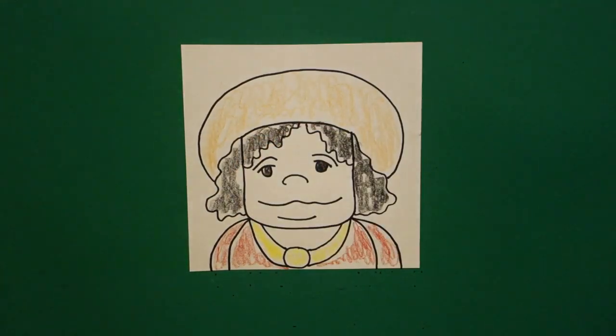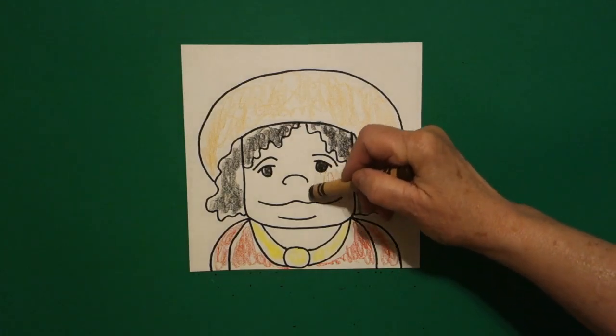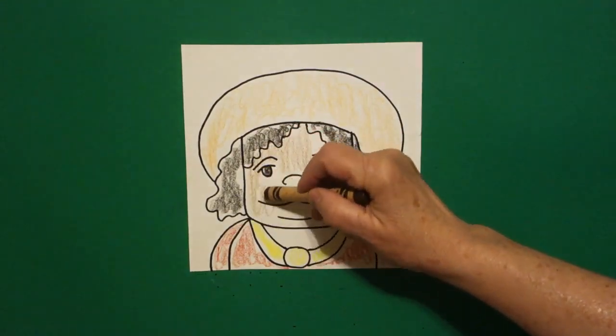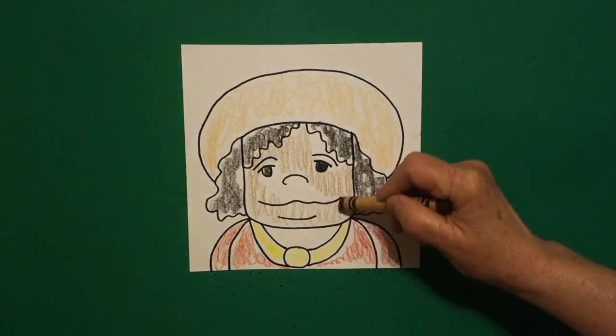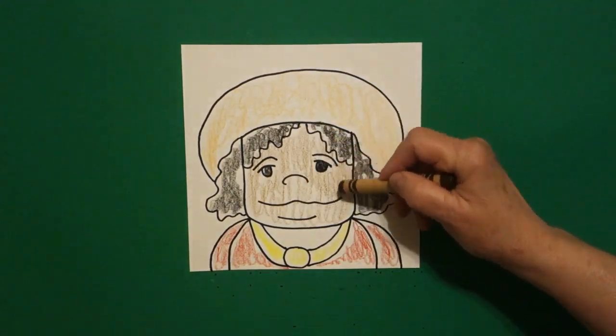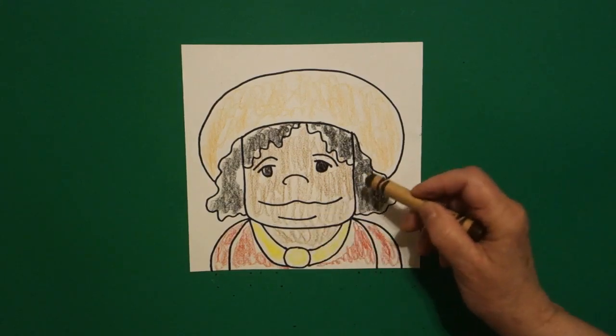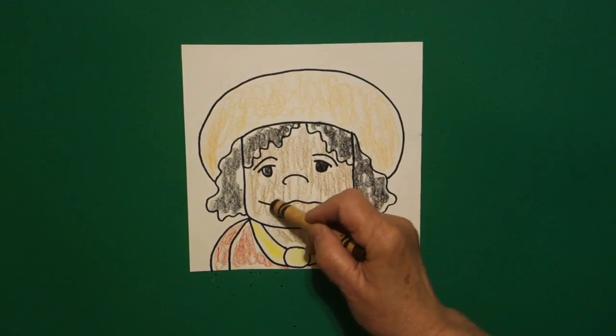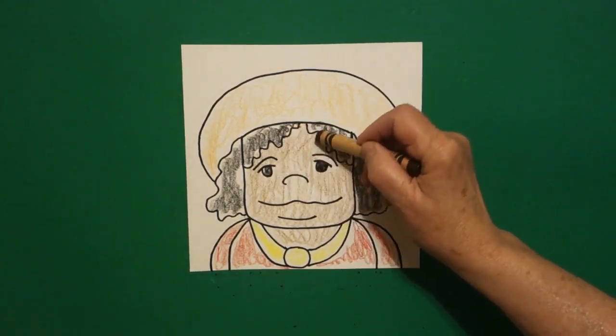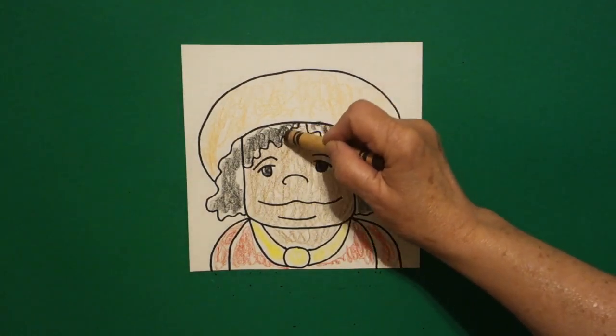Now for his skin color, I'm just using a regular brown. And what you might want to do is color it one time, going in one direction, just to get it all evenly spread. This is his neck. This should be brown. And then you might want to go over it again, going the different direction, just to make sure that you've got his skin all totally colored in. And I'm just using a regular brown.